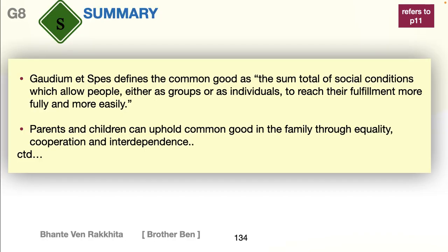On to the summary. Gaudium et Spes defines the common good as the sum total of social conditions which allow people, either as groups or as individuals, to reach their fulfilment more fully and more easily. Parents and children can uphold common good in the family through equality, activity, cooperation, and independence.